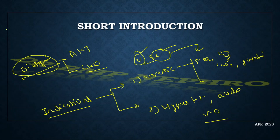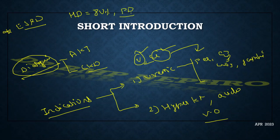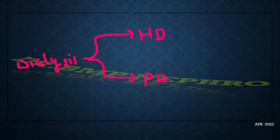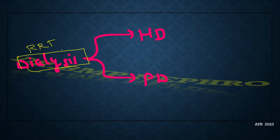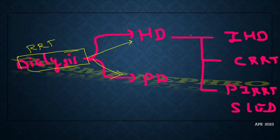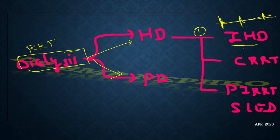Regarding the incidence of ESRD in developing and developed countries, hemodialysis is used in approximately 80% of cases and the remaining percentage use peritoneal dialysis. Under renal replacement therapy, dialysis is broadly divided into hemodialysis and peritoneal dialysis. Under hemodialysis, there are three categories. The first is intermittent hemodialysis, where dialysis is given three days per week for three to four hours.